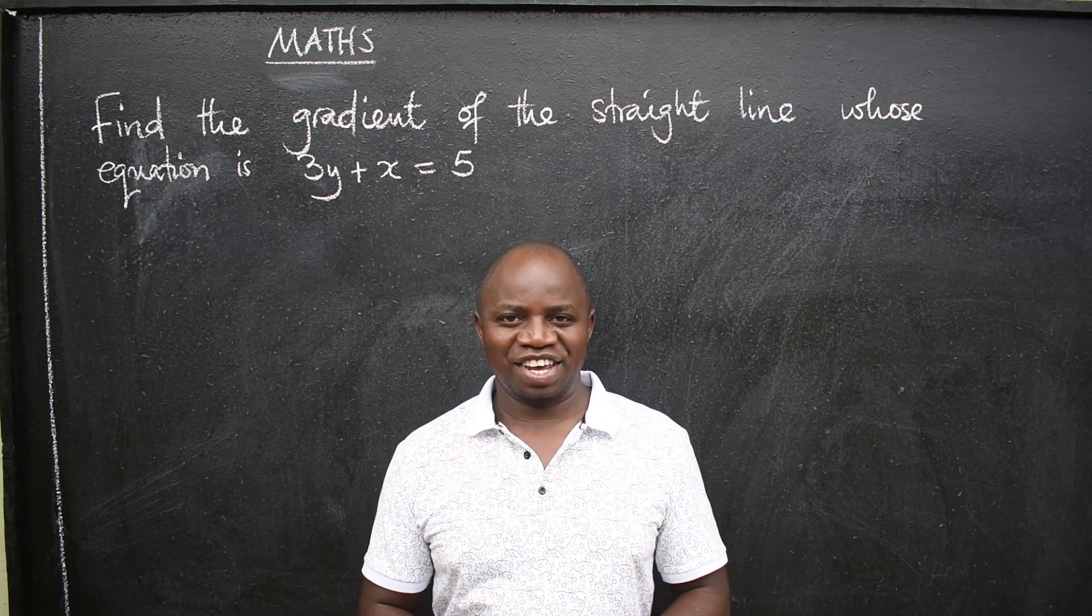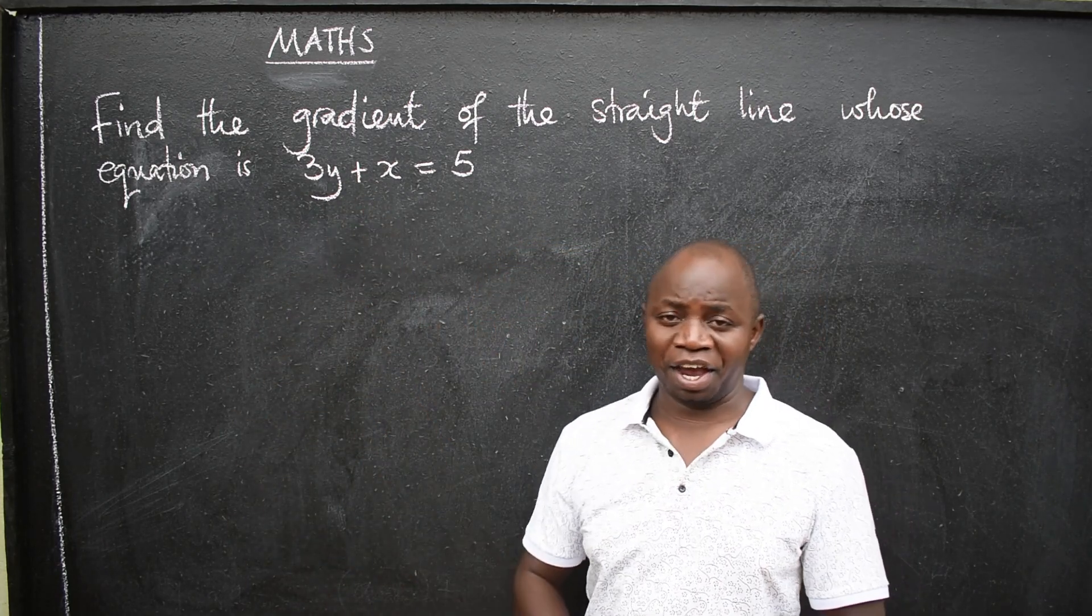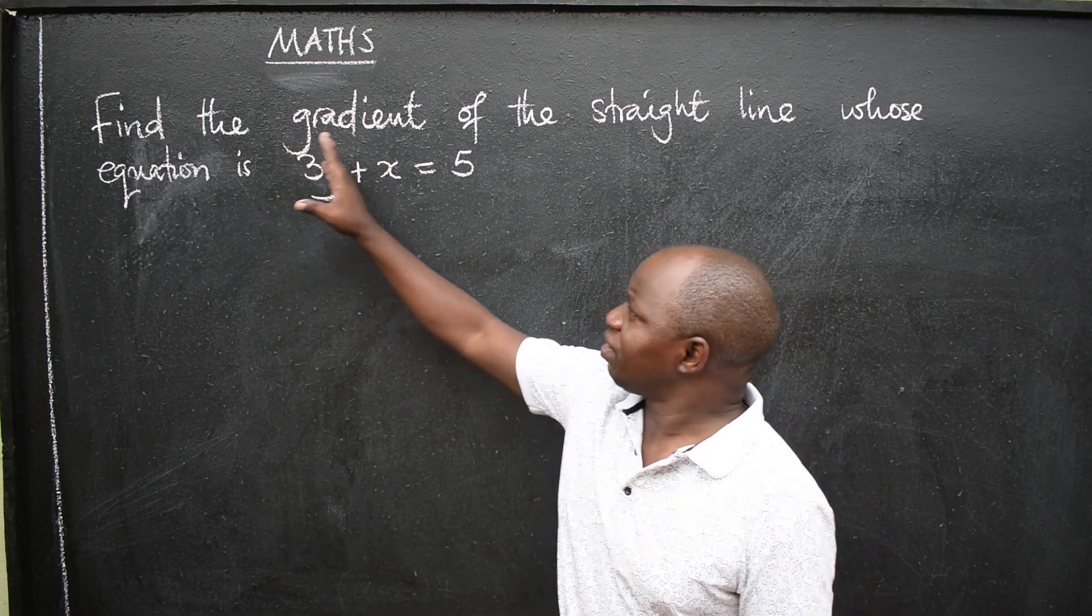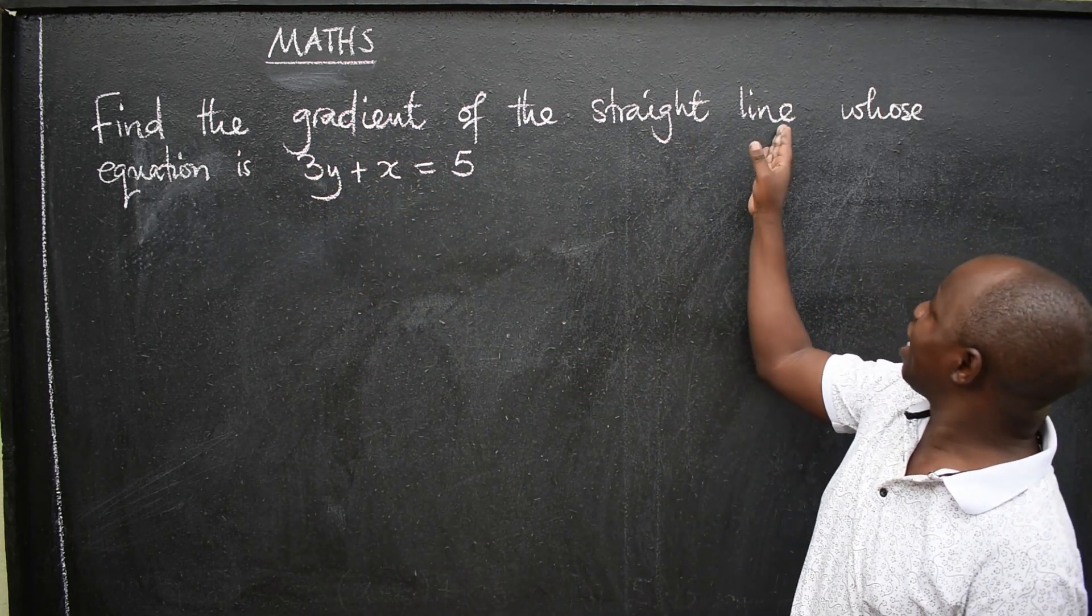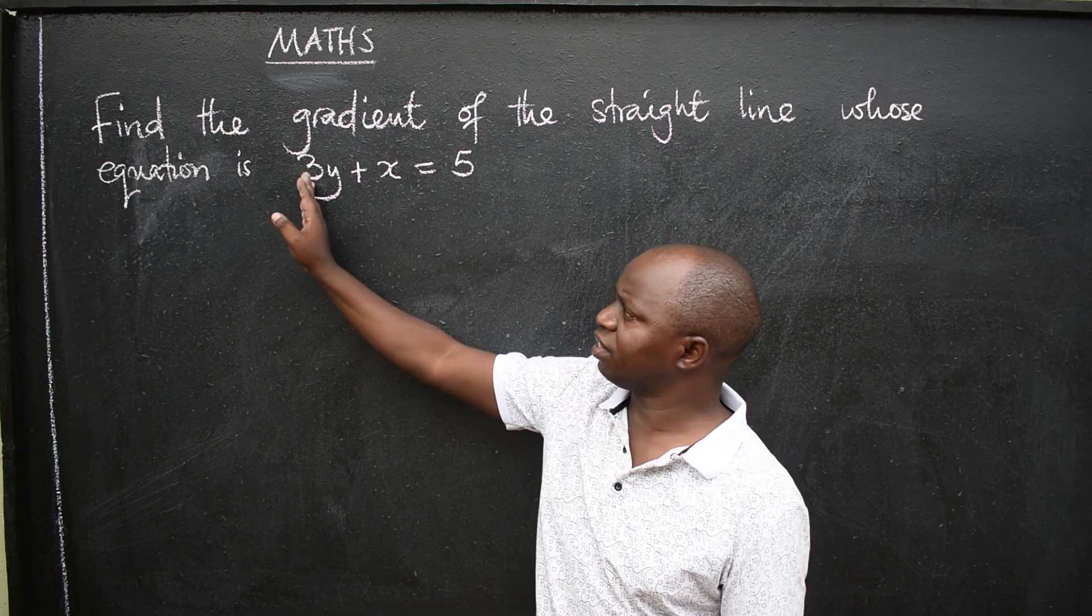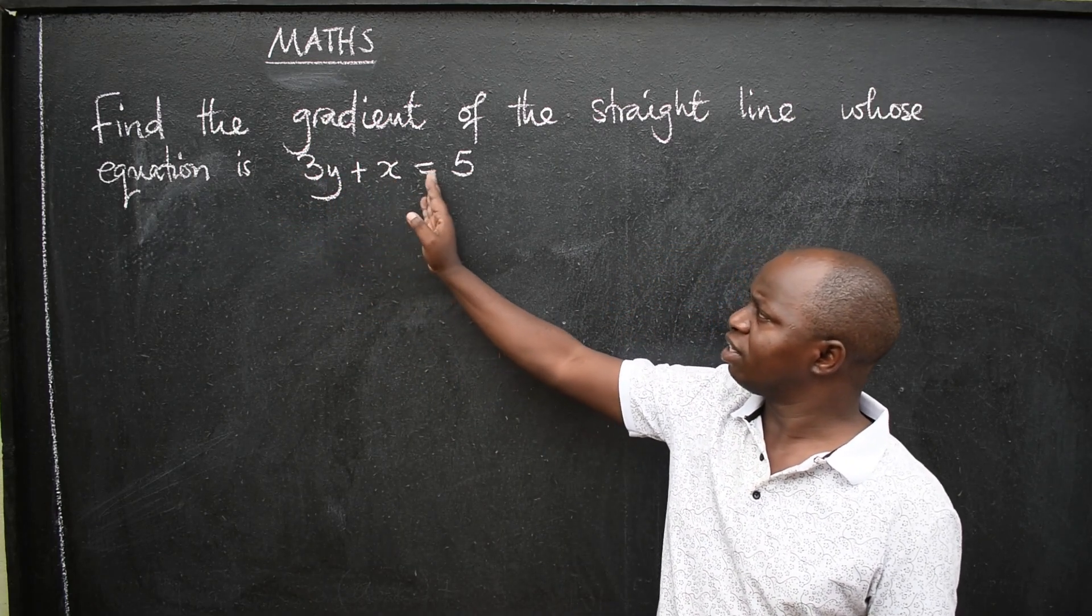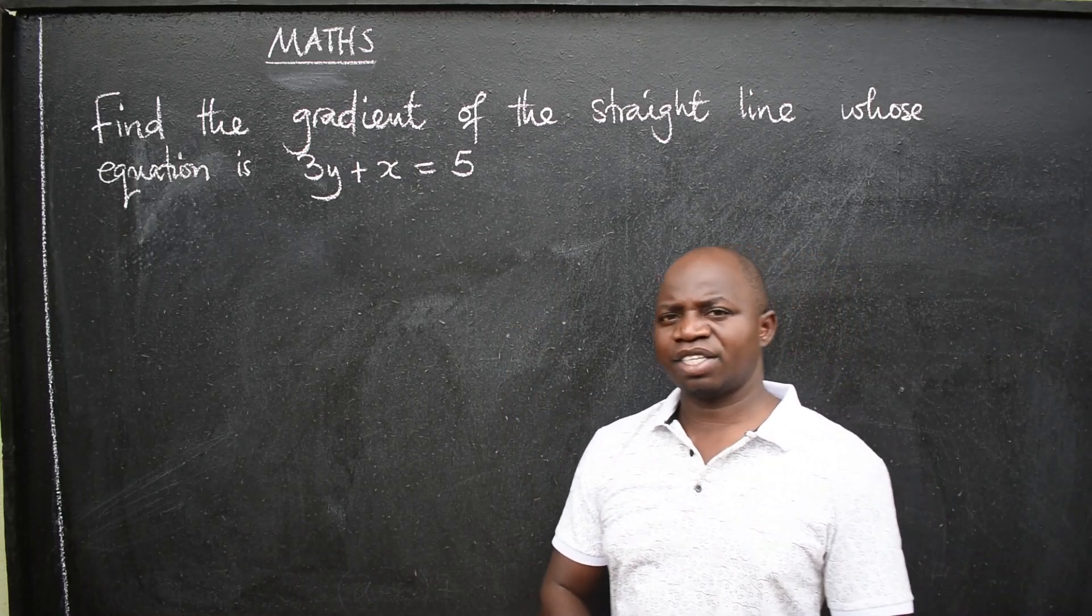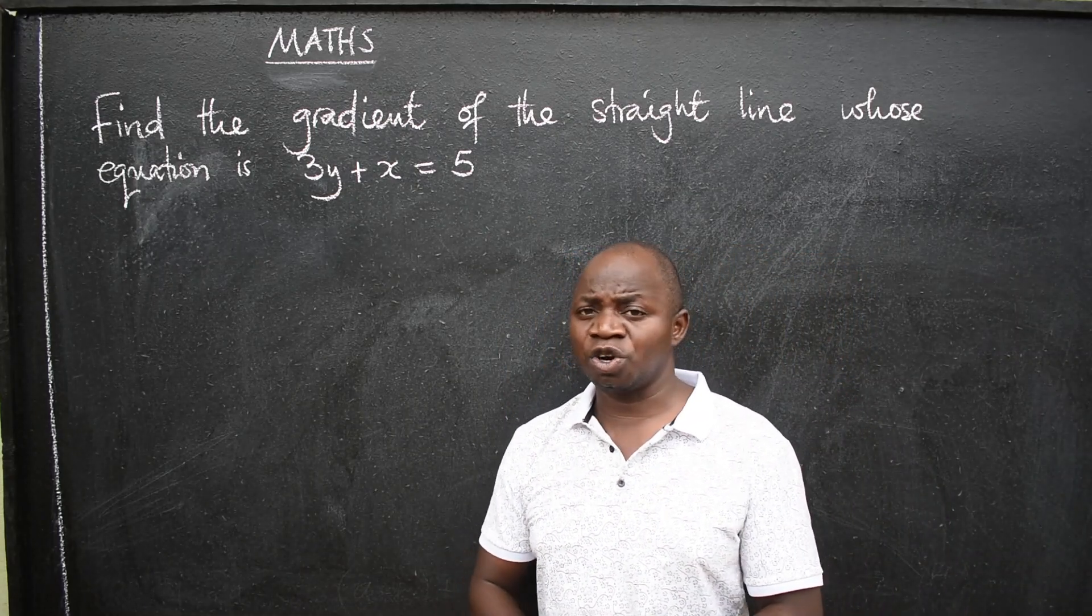Greetings learners. We have a question here. This is mathematics. Find the gradient of the straight line whose equation is 3y + x = 5. We've been asked to find the gradient. The question is from coordinate geometry.